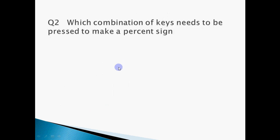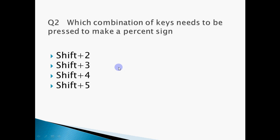Second question: which combination of keys needs to be pressed to make a percentage sign on the keyboard? You need to remember which number the percentage sign is above. The percentage sign is above number 5. All number keys have symbols above them — 1 has exclamation mark, 2 has at-the-rate, 3 has hash, 4 has dollar, 5 has percentage. To type those upper symbols, press Shift with that key. So Shift + 5 gives the percentage sign.